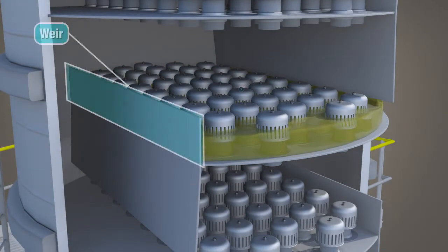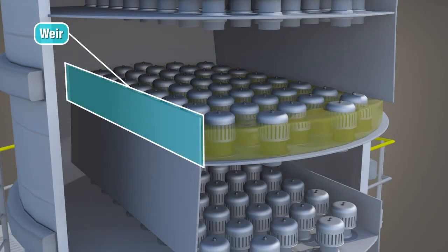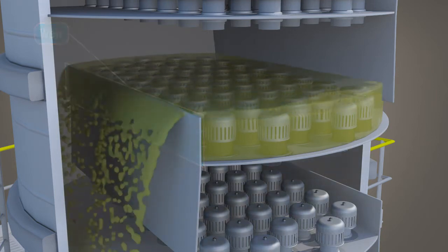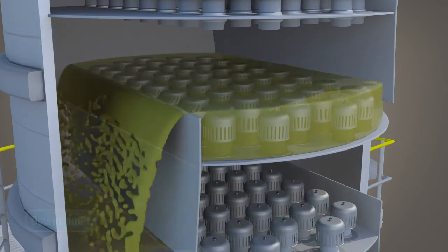The weir forces the liquid to accumulate on the tray and submerge the bubble caps. The excess liquid on the tray flows over the weir and is routed to the next tray by the downcomer.